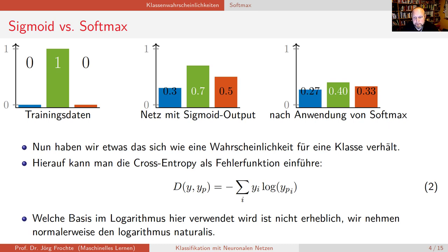Dann haben wir erstmal hier links die Trainingsdaten, also so wie es sein sollte, 0, 1, 0. Haben wir nicht so ein richtig gut trainiertes Netz in der Mitte mit 0.3, 0.7, 0.5. Wenn wir darauf eben diese Softmax-Funktion von der letzten Folie anwenden, bekommen wir etwas, was sich eher wie Wahrscheinlichkeiten verhält, nämlich 0.27, 0.4 und 0.33. Die Summe ist dann 1 und wir haben etwas, was sich wie eine Wahrscheinlichkeit anfühlt.